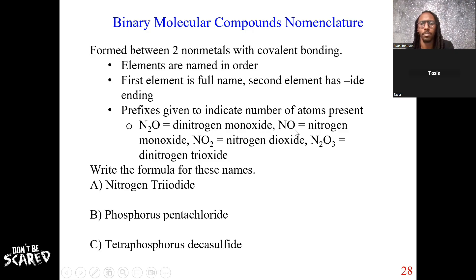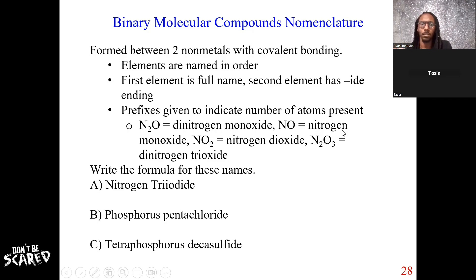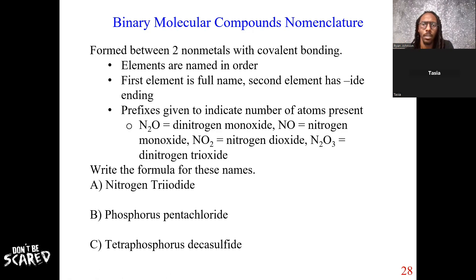Now let's look at NO. This is nitrogen monoxide. Notice how in this case we don't need to say mononitrogen — it's redundant. It's implied that if I say nitrogen, you understand there's only one nitrogen. So we don't have to say mononitrogen — just nitrogen, and because I have one oxygen it's monoxide, changing oxygen to oxide.